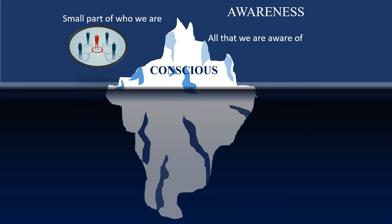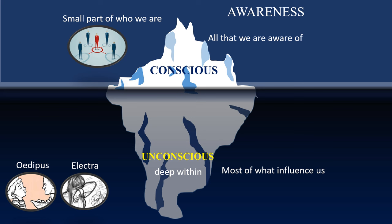The next one is the unconscious. Freud said that most of what we go through in our lives — emotions, beliefs, feelings, and impulses deep within — are not available to us at a conscious level. He believed that most of what influences us is our unconscious. For example, the Oedipus and the Electra complex were both buried down in the unconscious, out of awareness due to the extreme anxiety they caused.